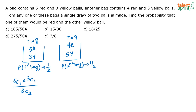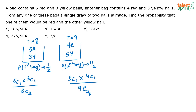Now look at bag two. It has four red and five yellow balls — nine balls in total. The probability of selecting one red and one yellow from this bag is: 4C1 (one red from four) multiplied by 5C1 (one yellow from five), divided by 9C2 (total ways of selecting two balls from nine).